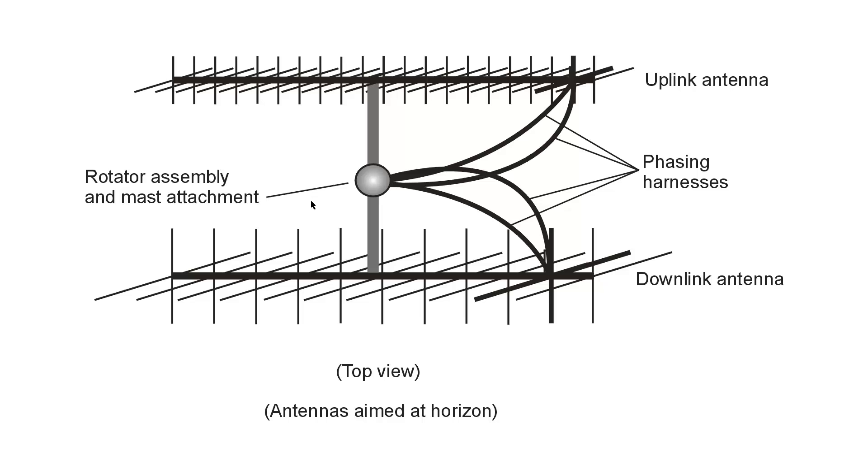And it can be very difficult to keep the antenna pointed at the satellite. In the case of a geostationary satellite, you get the best of both worlds, because the satellite stays in the sky, in the same place in the sky, 24 hours a day, 7 days a week. And you can just set the antenna to be aimed at the satellite, and then you don't need any rotators at all. That's the best of all worlds.